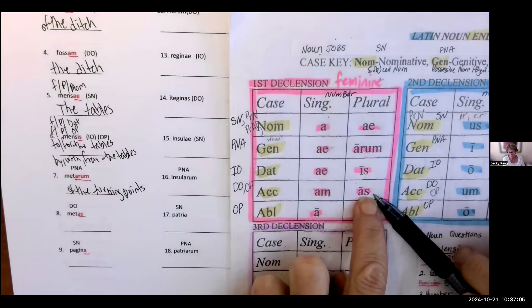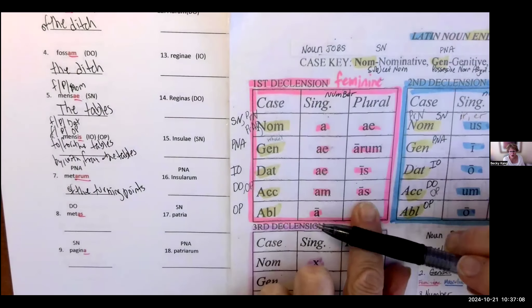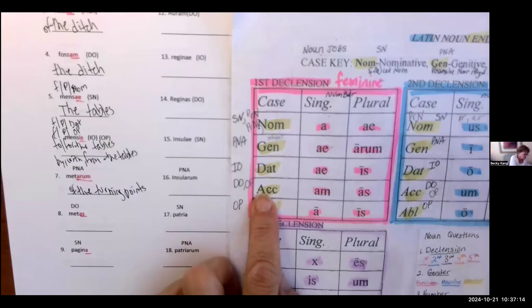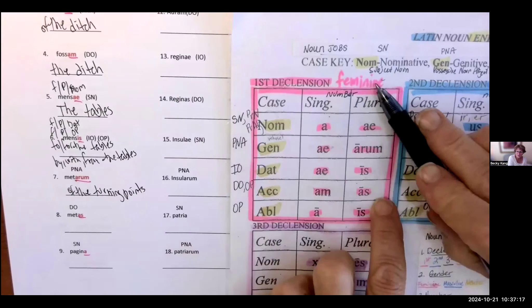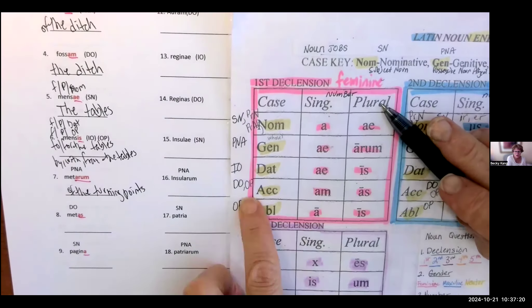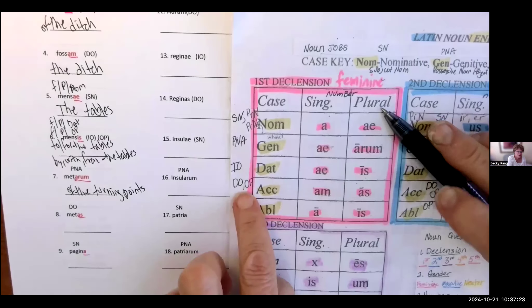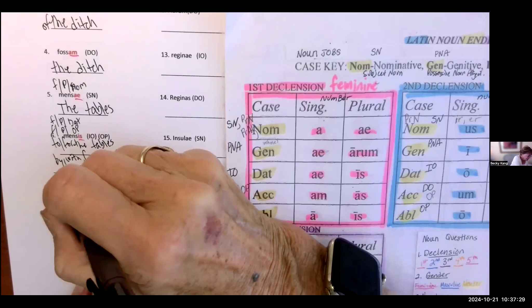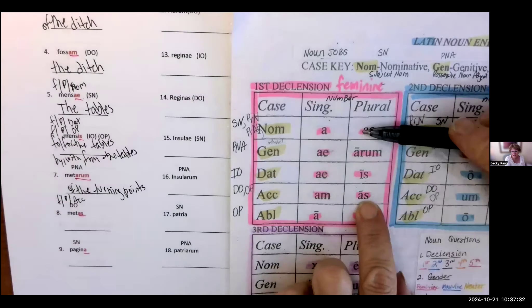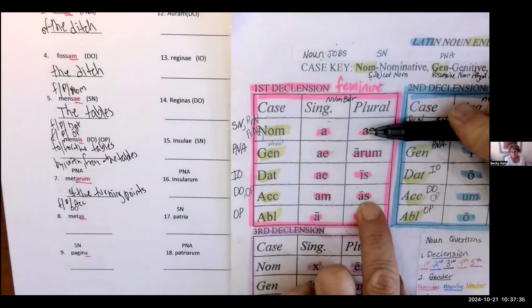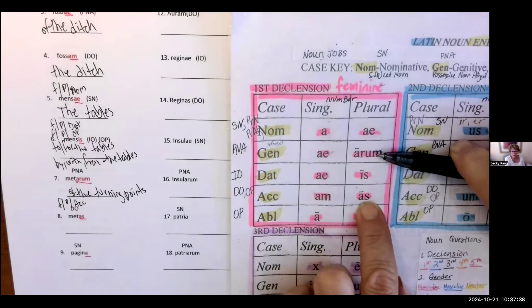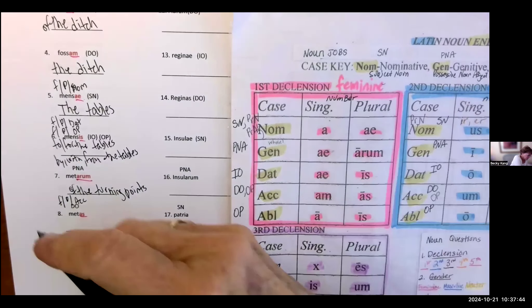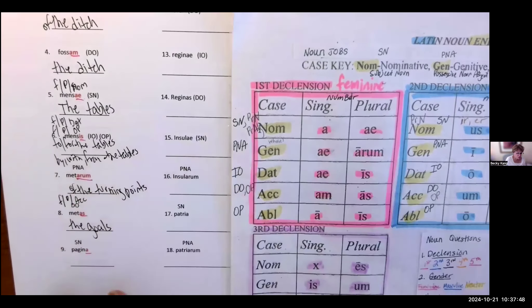As is right here. It's a direct object, also known as accusative. What gender is as? It's feminine. What number is as? Plural. What job, what noun case? Accusative. And so, you're going to parse it up here, guys. Feminine, plural, accusative. And it's translated the same as the subject. So, this is of the goal, or of the turning points, to or for the goals, the goals. Remember, you have two choices that you can translate that word, turning point or goals.